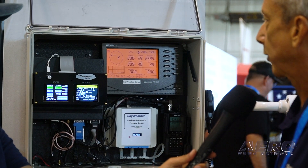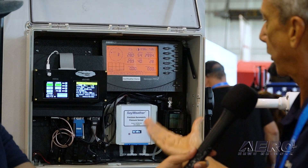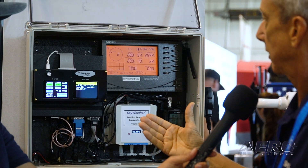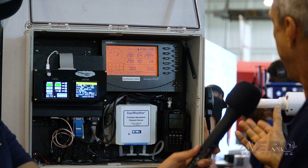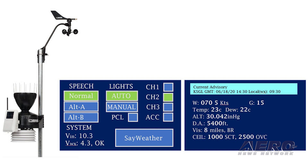This is the SayWeather Pro Plus system. The SayWeather Pro Plus actually has the ability to add instruments for visibility, present weather, sky condition, and ceiling information. This particular system is as close to an AWOS as you can get.